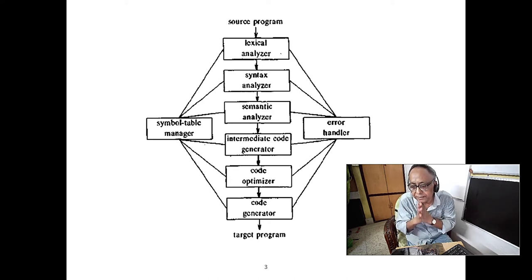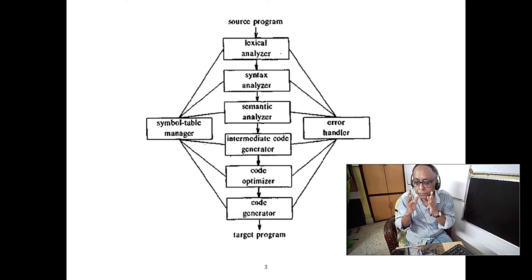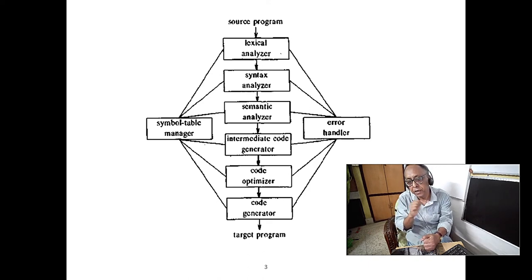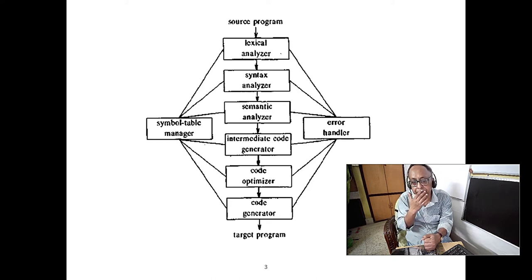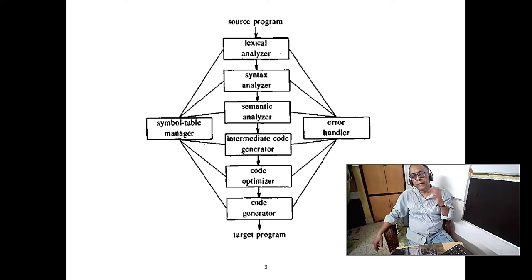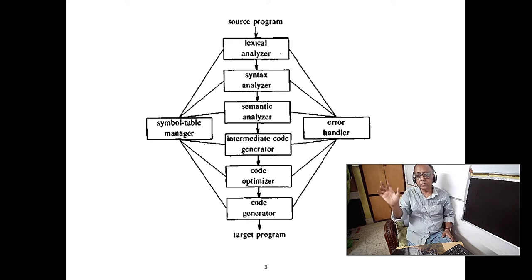That is the reason you always tell programmers: whenever you define your variable names, don't be cryptic. Instead of just 'i', you should say 'loop_i'. Instead of a short variable name like 'sb_ac_bal', write 'savings_account_balance', because another programmer might misinterpret the abbreviation. Always write the full, meaningful name.